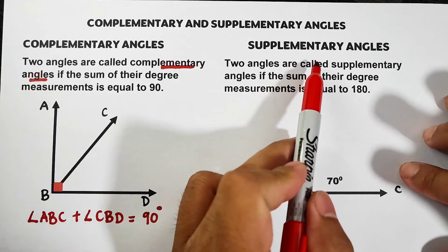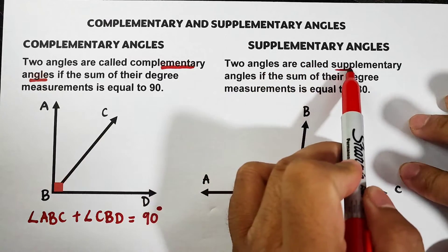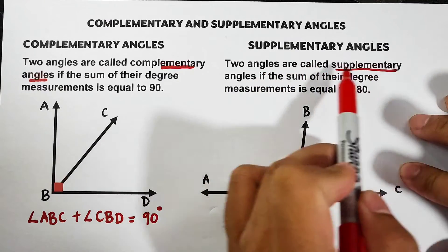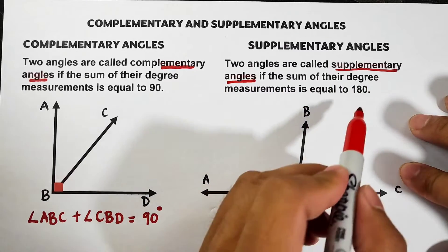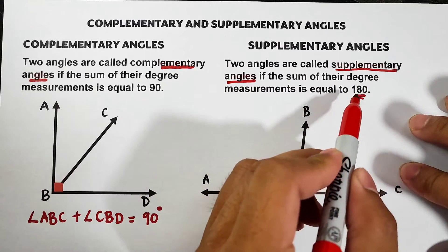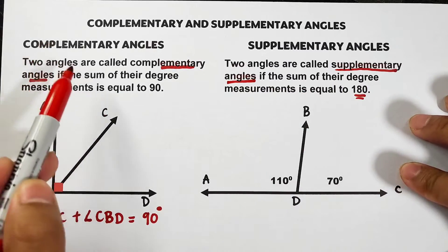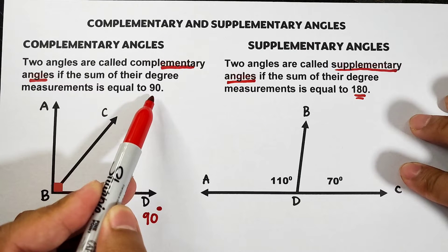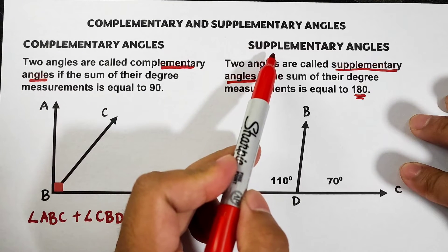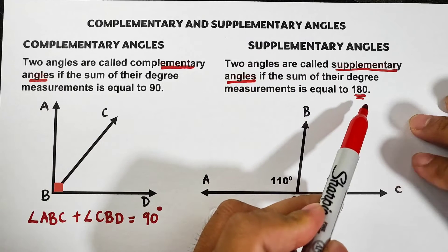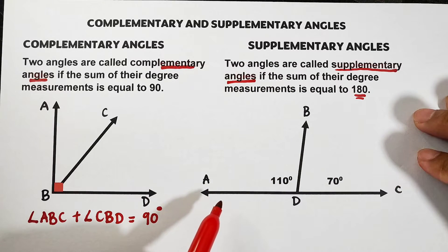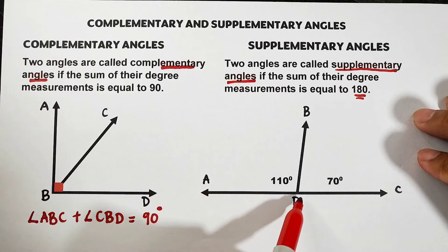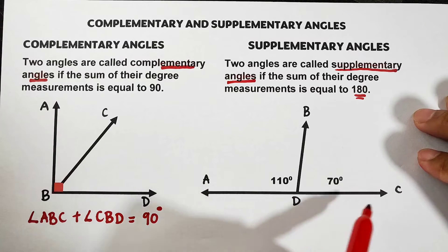We have supplementary angles. Two angles are called supplementary angles if the sum of their degree measurements is equal to 180 degrees. In complementary angles the two angles sum to 90, while for supplementary angles that sum is equal to 180. Here we have a straight angle, angle ADC.